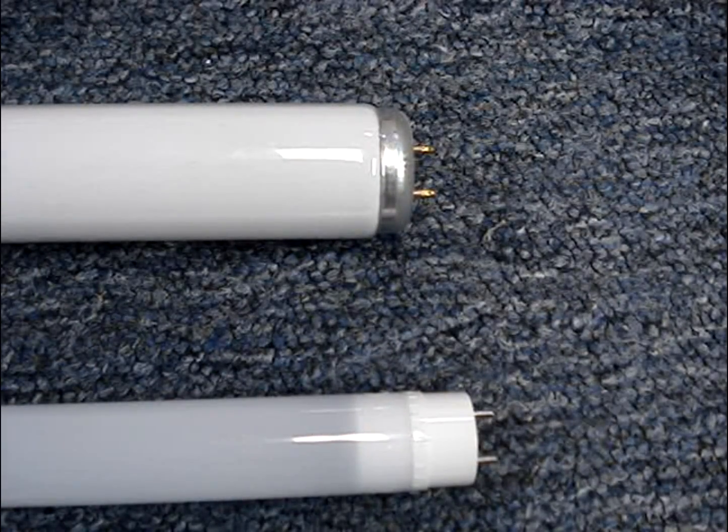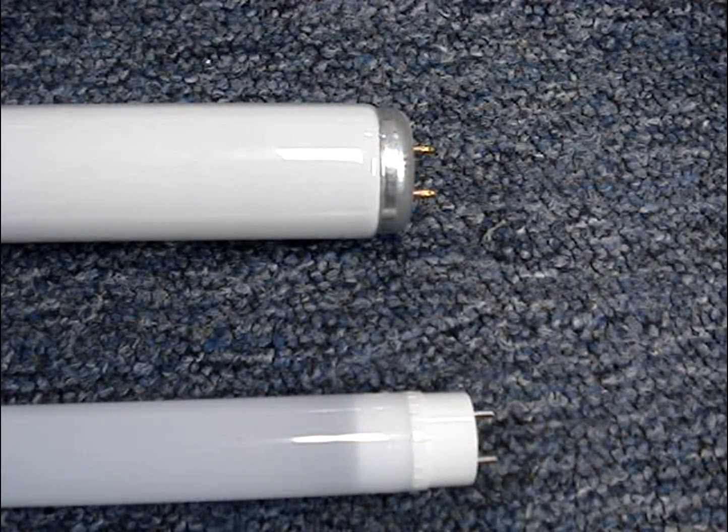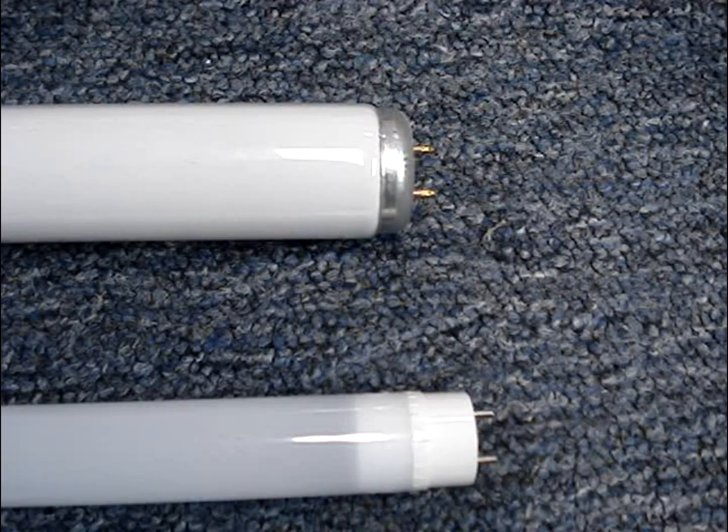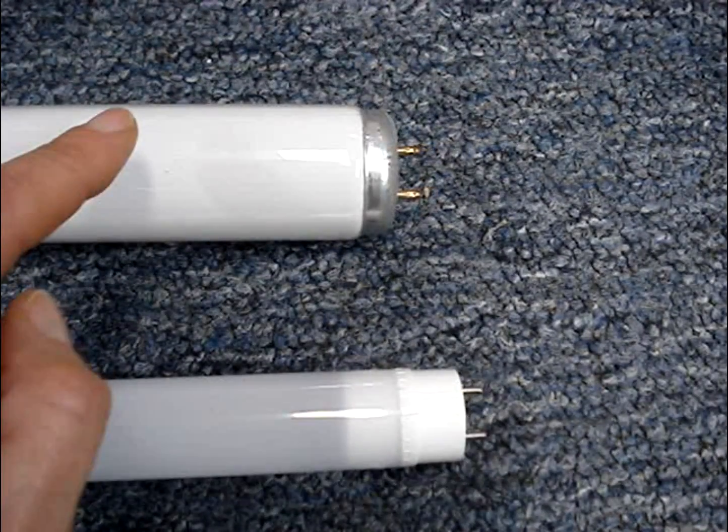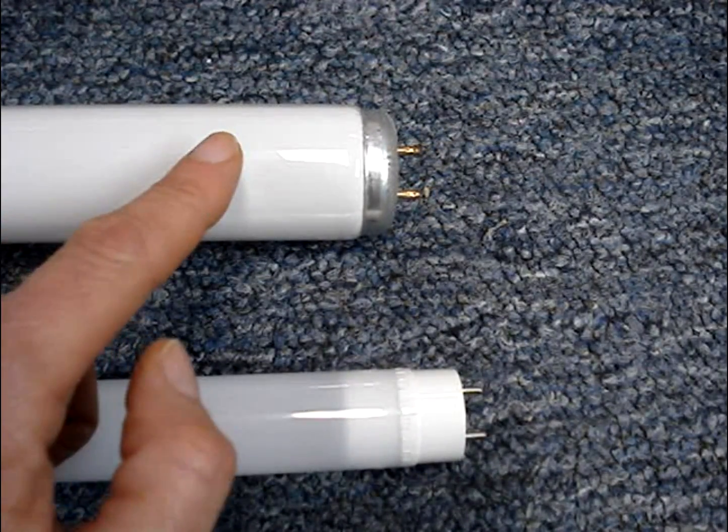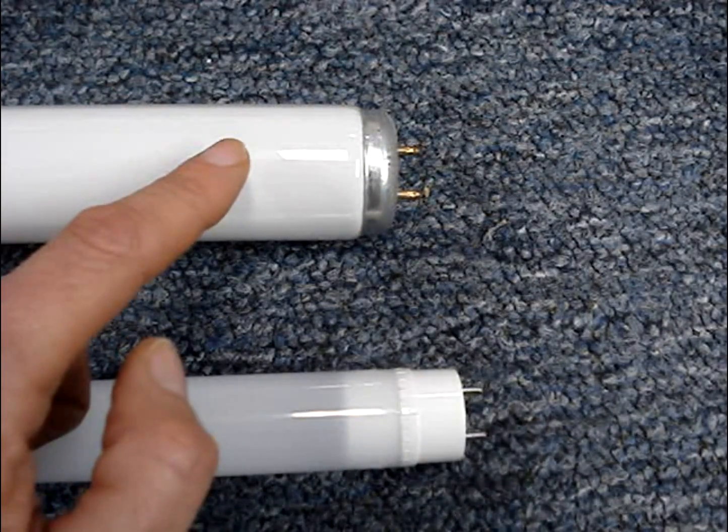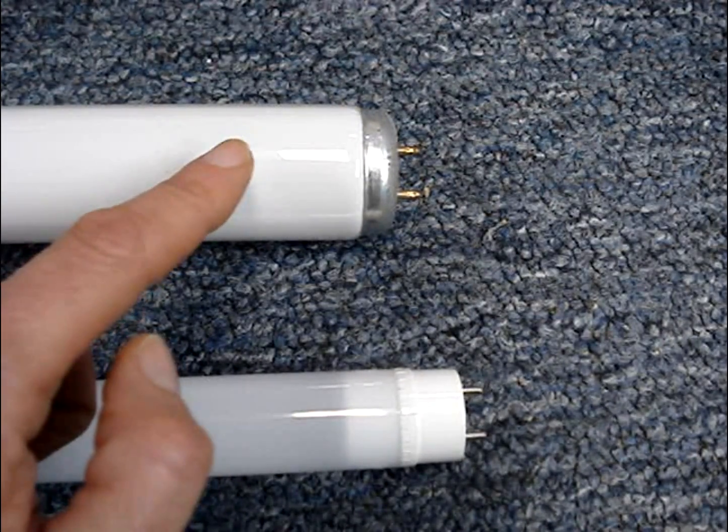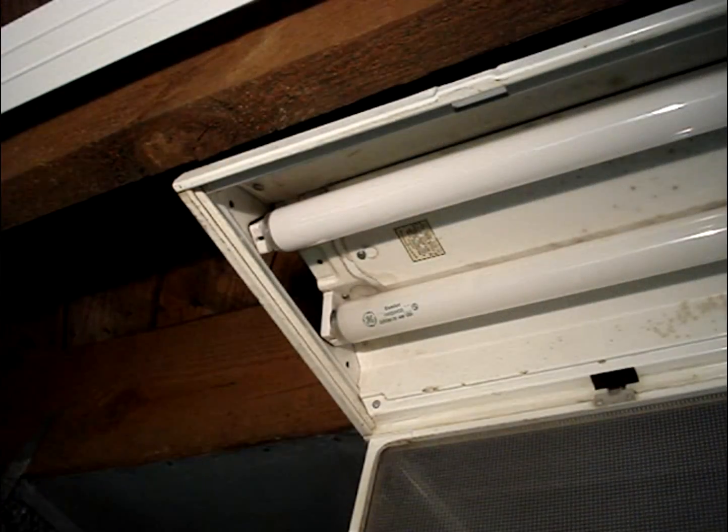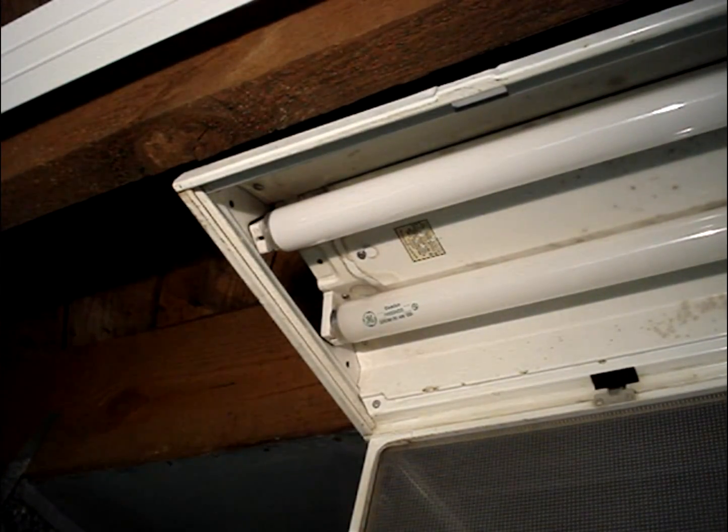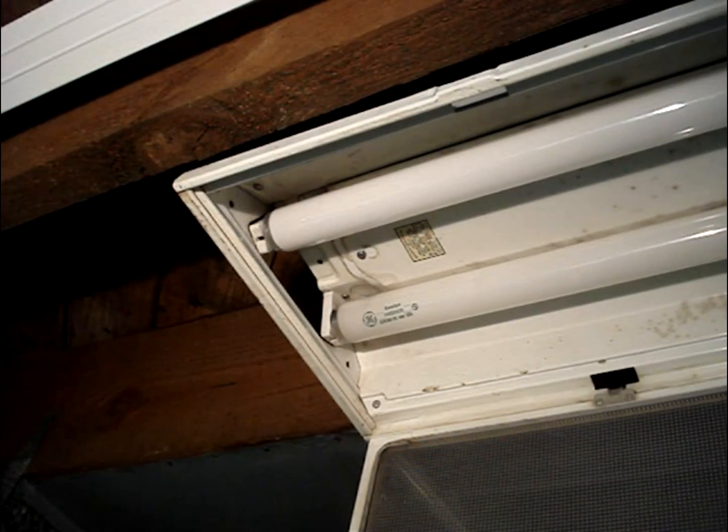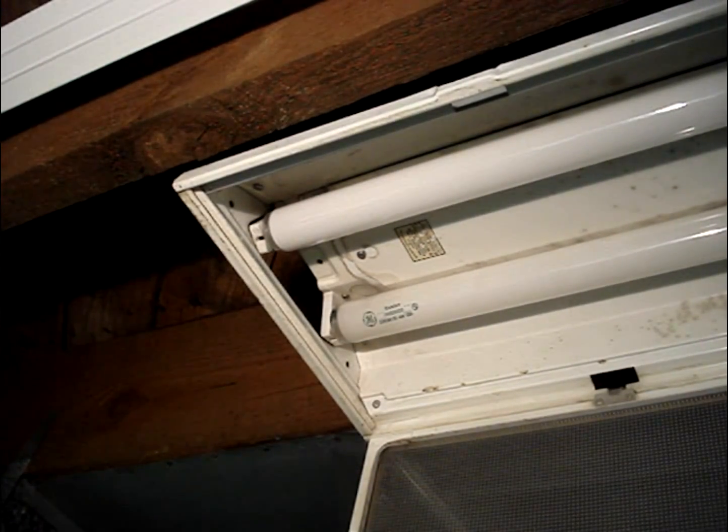The easiest way to convert to LEDs is to buy what is commonly called plug-and-play tubes. Most of them work on the T12 tubes like this one and the smaller diameter T8 tubes. It's pretty straightforward. Just remove power, take out the old fluorescent tubes and install the new LED tubes.